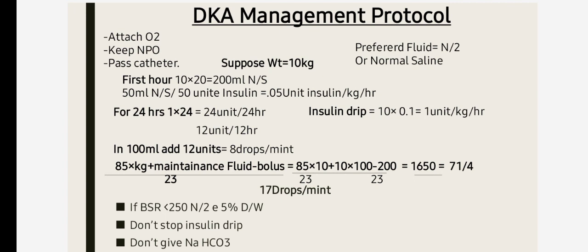The standard method of insulin infusion is to add 50 units of insulin in 50 ml of normal saline and start an infusion pump at a rate of 0.05 to 0.1 unit per kg per hour. If you don't have an insulin pump, use a dial flow. The method of insulin calculation is 0.1 unit per kg per hour multiplied by weight.